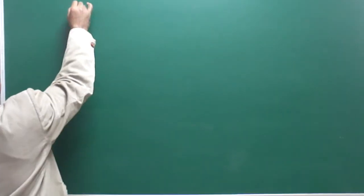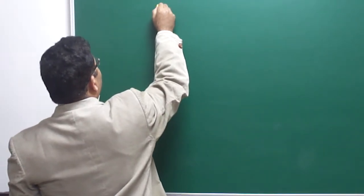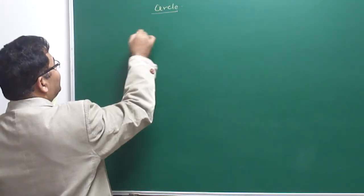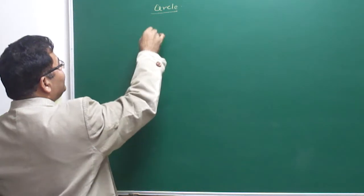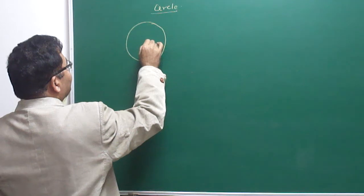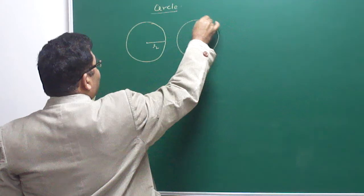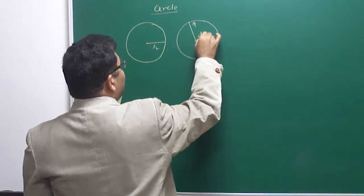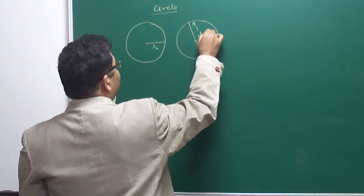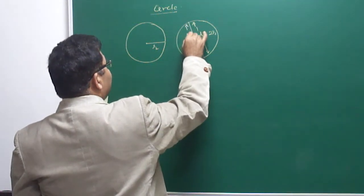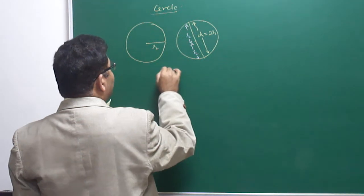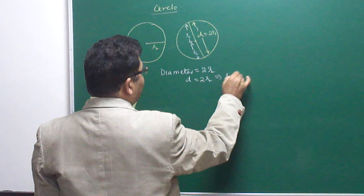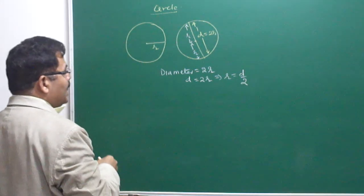A circle is the locus of a point which moves such that its distance from a fixed point is always constant. In mensuration, the distance from the center to the circle is called the radius. The line joining two points on the circumference through the center is the diameter, where d = 2r, or r = d/2.